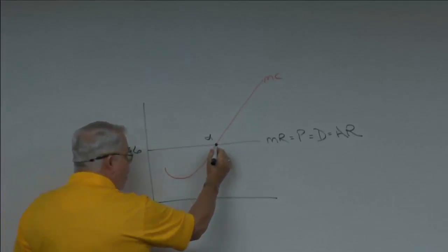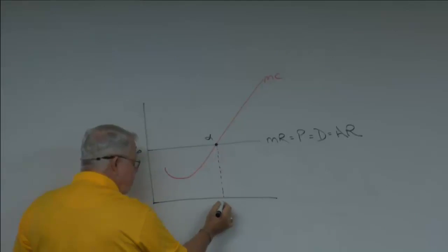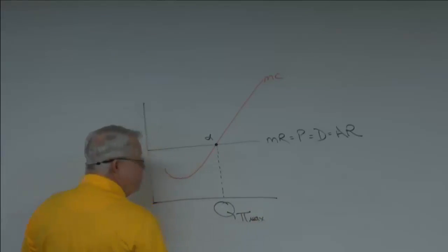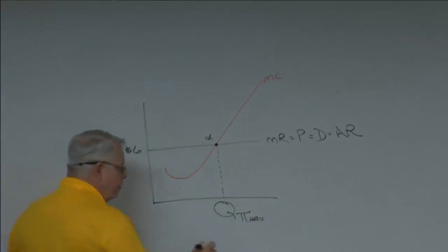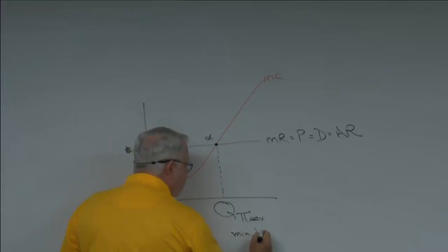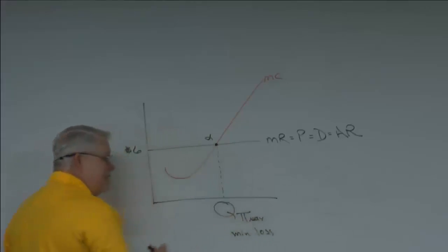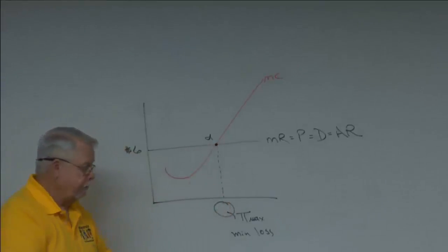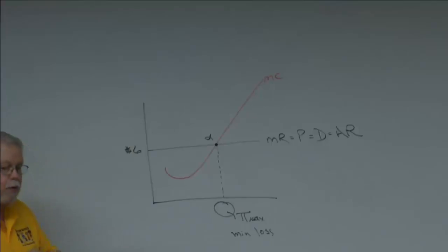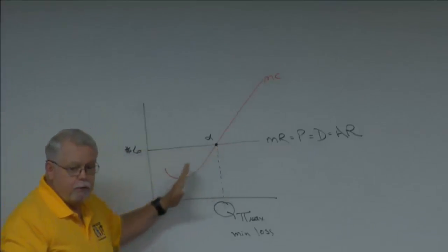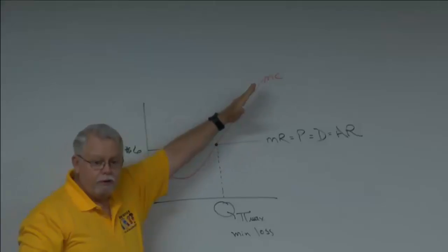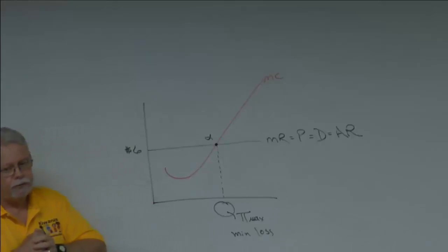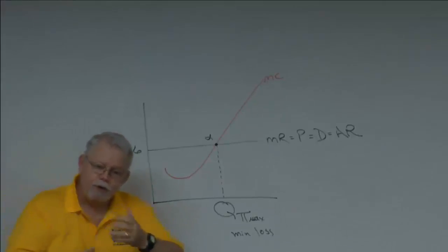Point alpha tells us the quantity to produce and sell to either maximize your profit or, in some short-run circumstances, to minimize your loss. This is the place to be — this decision drives everything else. We've assumed a flat marginal revenue but an increasing, upward-sloping marginal cost.